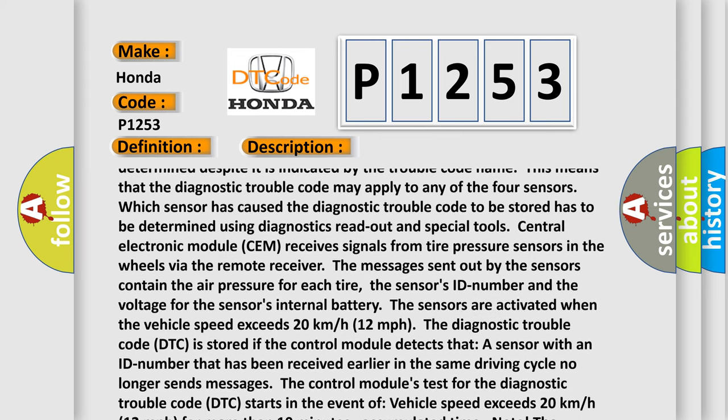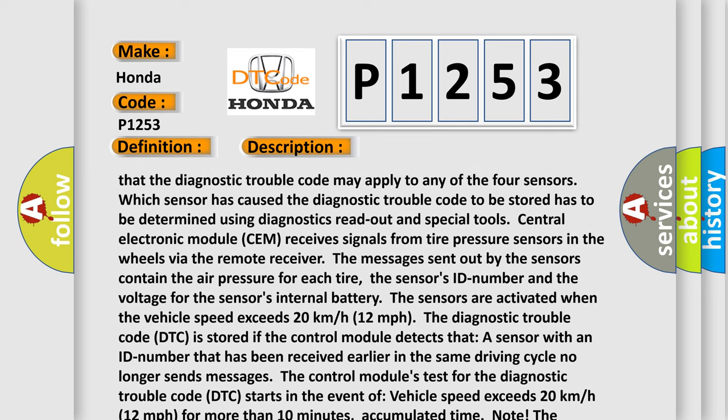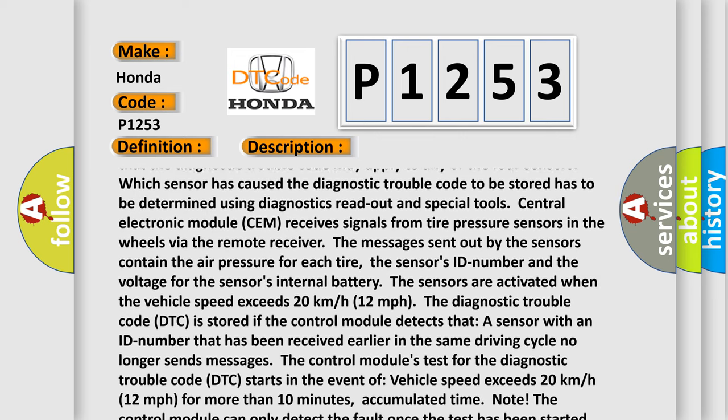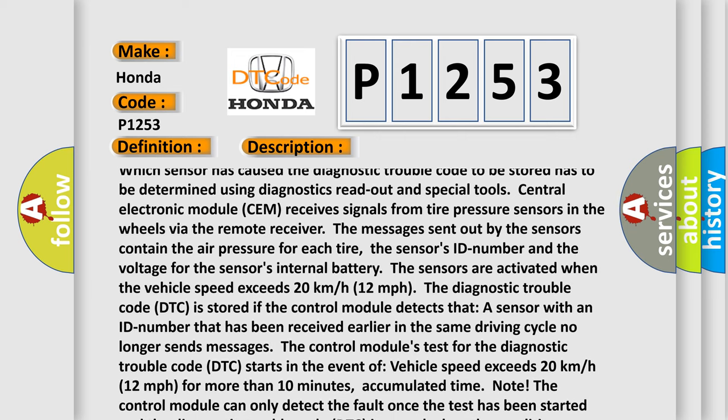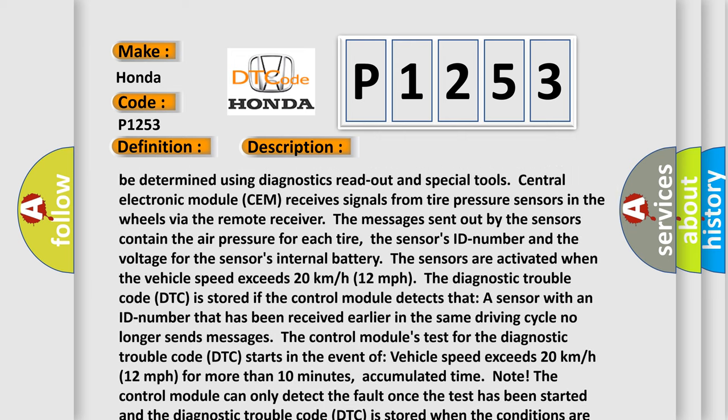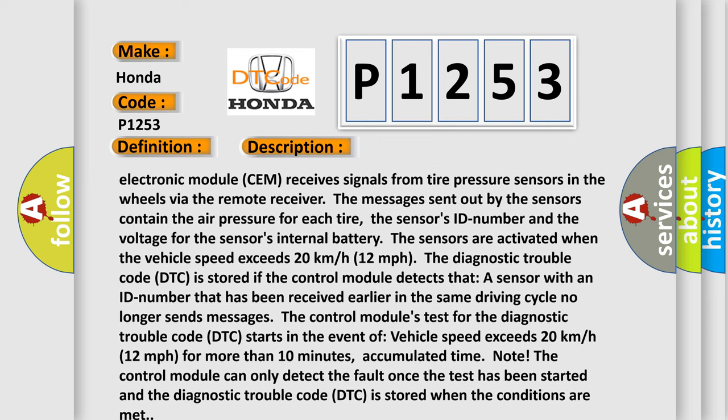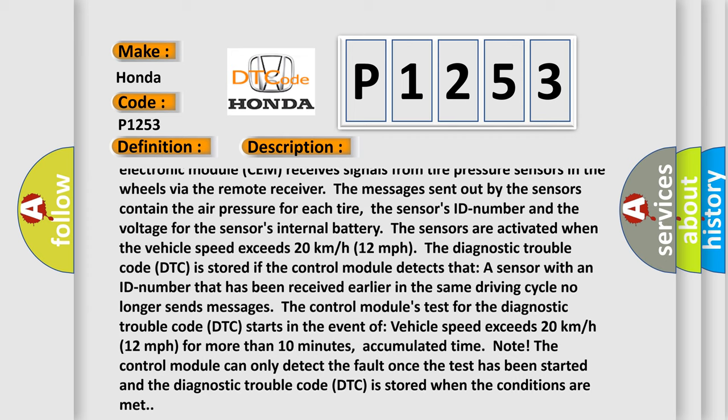The messages sent out by the sensors contain the air pressure for each tire, the sensors' ID number, and the voltage for the sensors' internal battery. The sensors are activated when the vehicle speed exceeds 20 kilometers per hour (12 miles per hour).